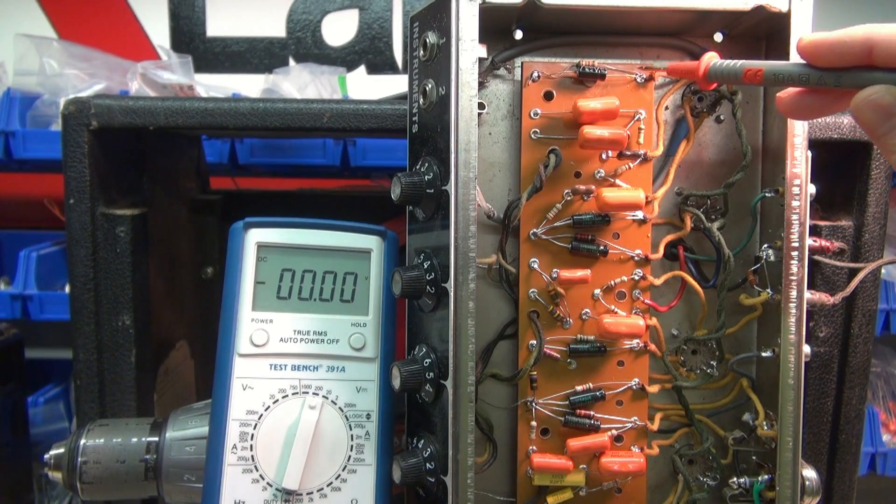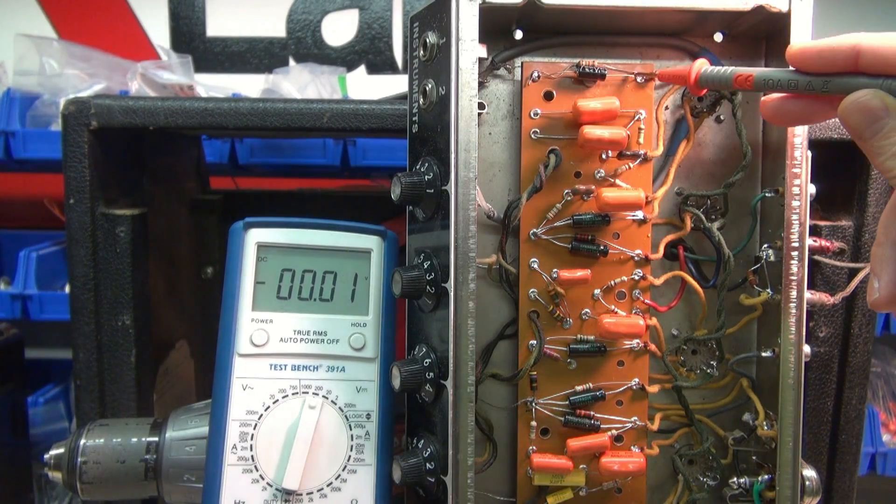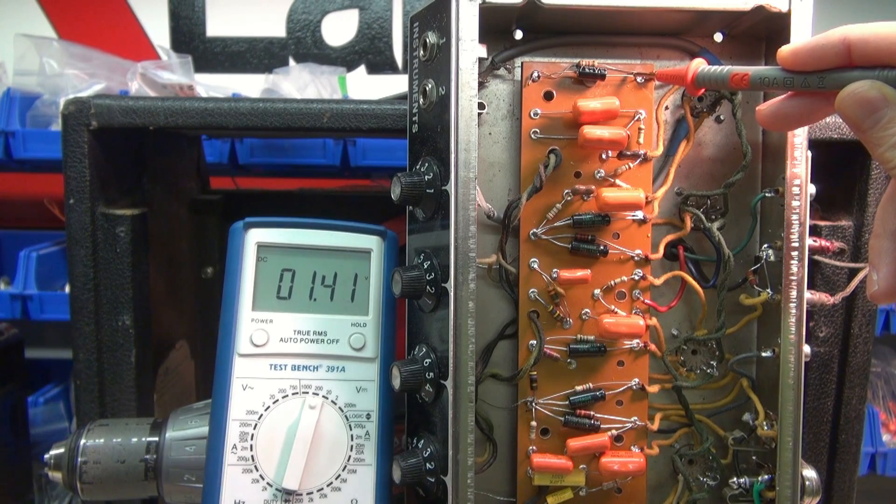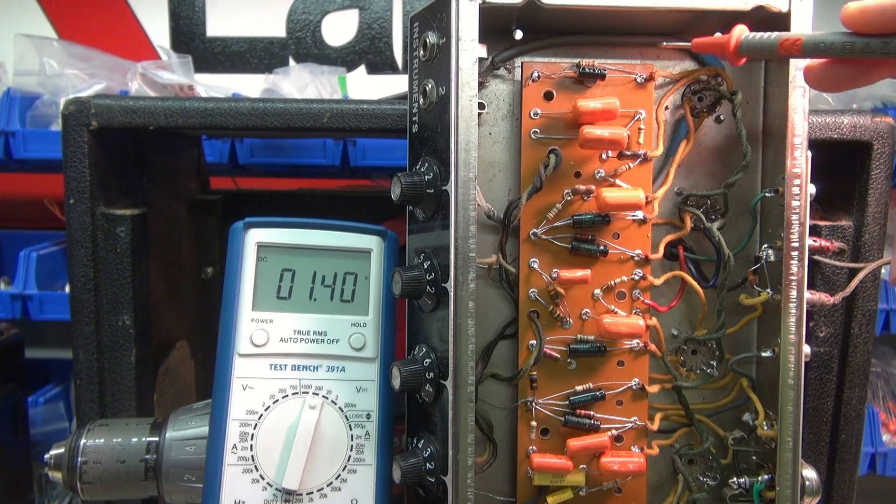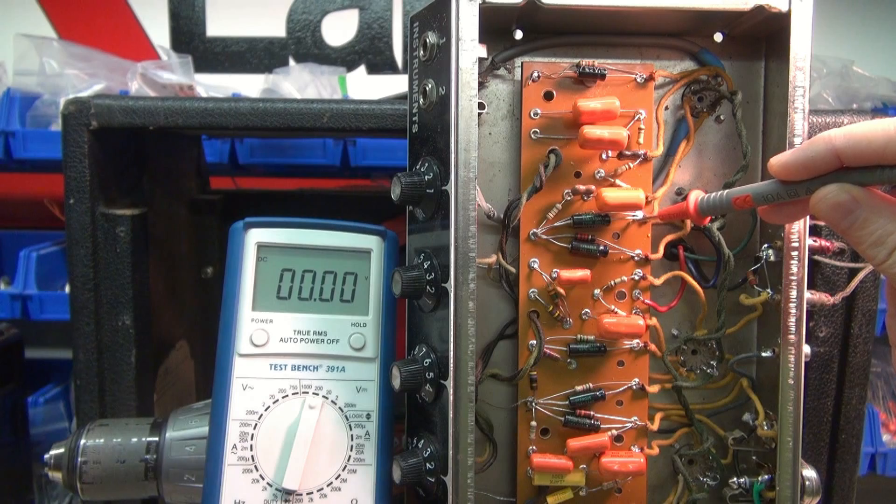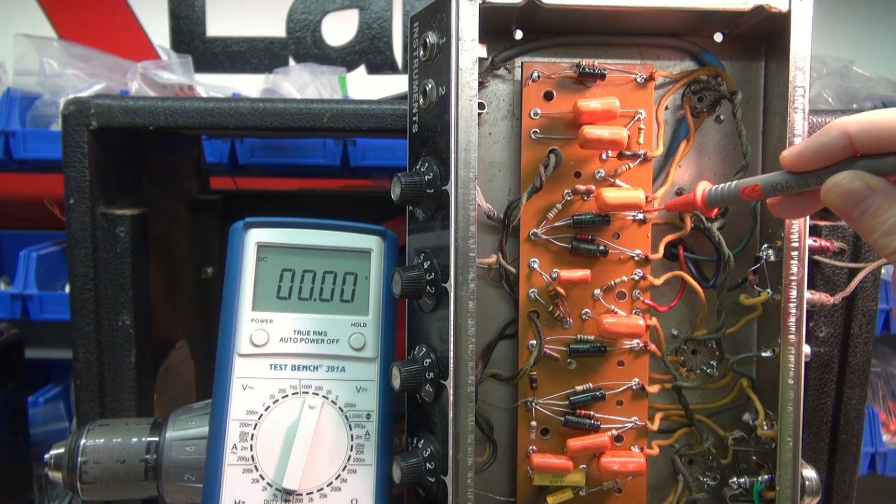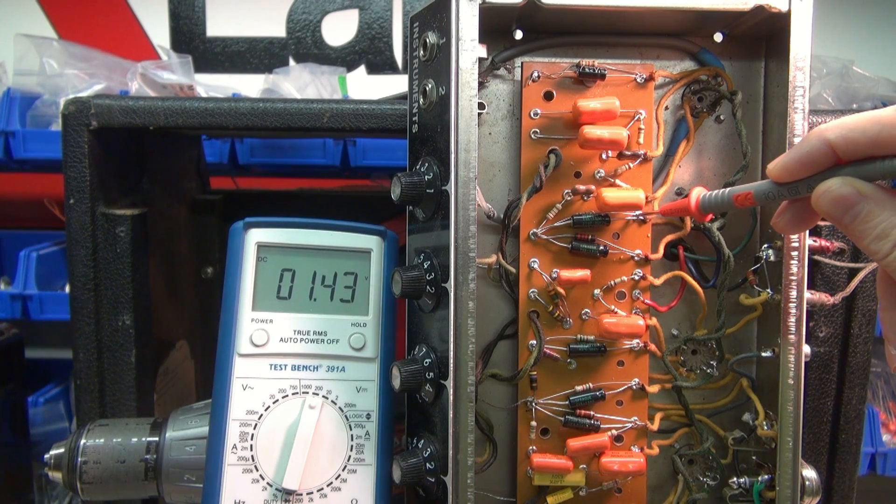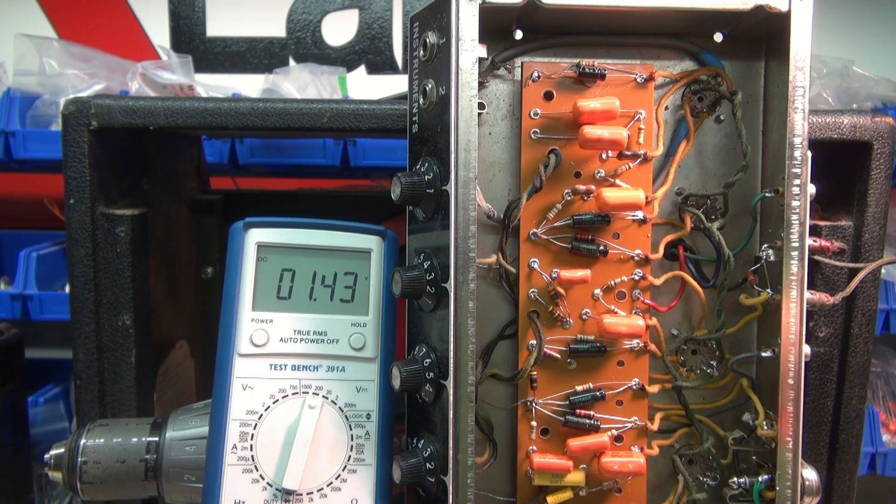Now if you were to measure the voltage, of course with the amp on, you're going to see, in this case, about 1.41 volts there. And we'll look at the other cathode. If I can get my meter to cooperate. 1.43 volts. Alright.